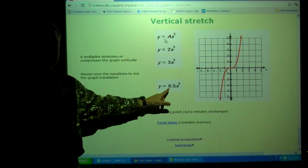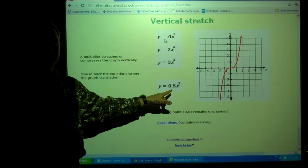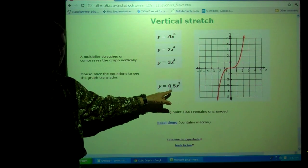What about this one? When A is in between 0 and 1, like 0.5, what do you think is going to happen there? It's going to be wider. Watch. See how it's wider?